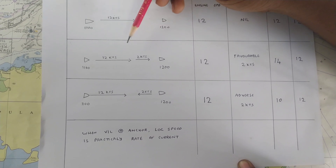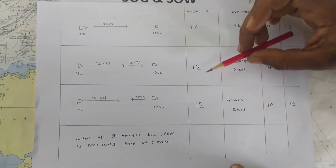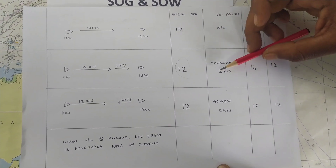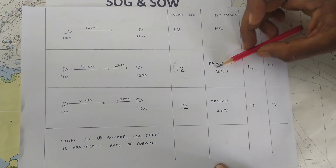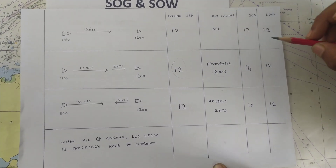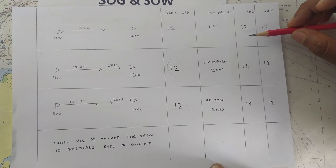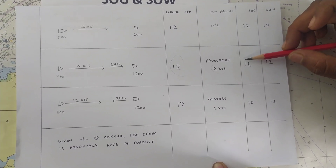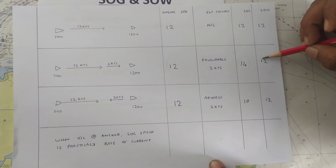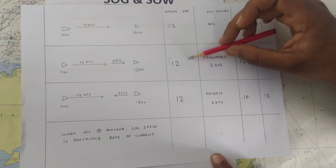In another situation, there is a favorable current of two knots — maybe a combination of current and wind. Your engine speed remains constant at 12 knots. Since you are having a favorable effect of two knots, your speed over ground — remember, speed over ground is the GPS speed — will be 14 knots, and speed over water will remain 12 knots.